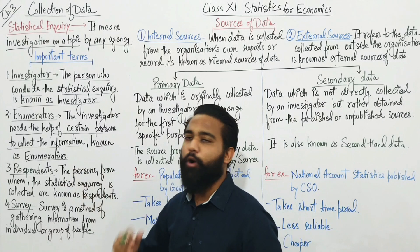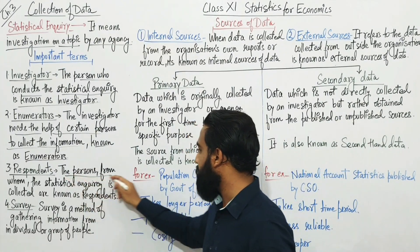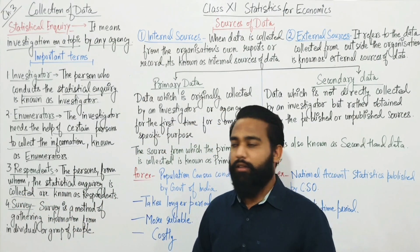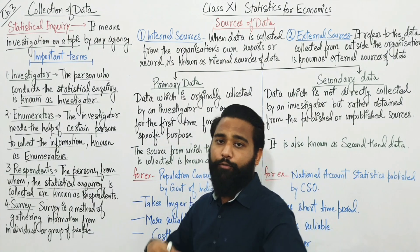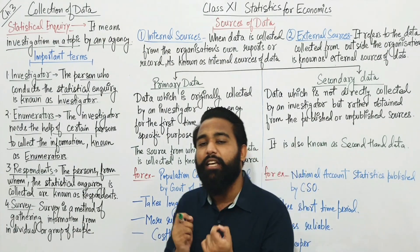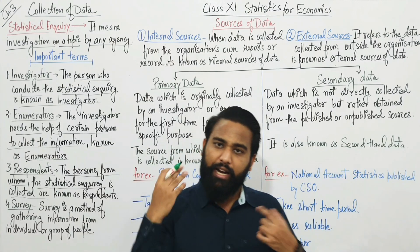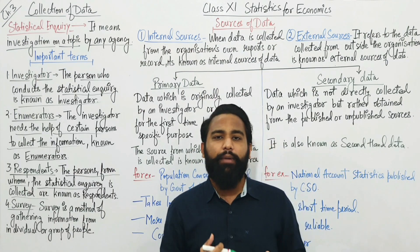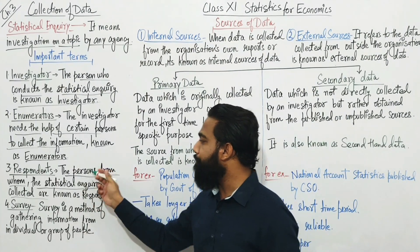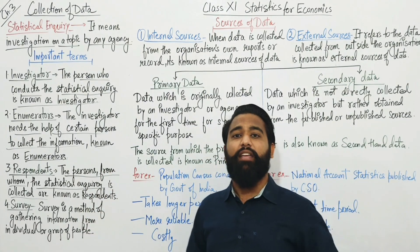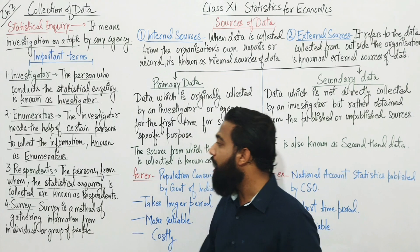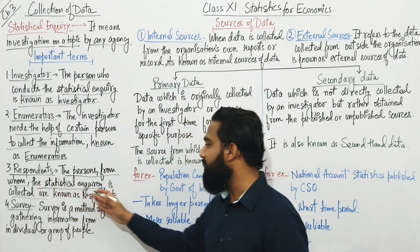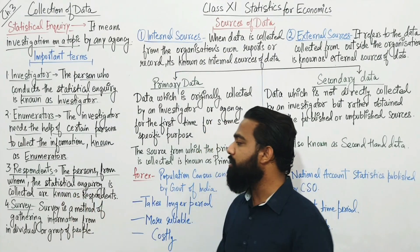The third term is respondents. The persons from whom the statistical inquiry is collected are known as respondents. For example, suppose I need to conduct an inquiry and I ask certain persons questions — the persons who are replying back, giving me the answers, and providing me the data are the respondents.